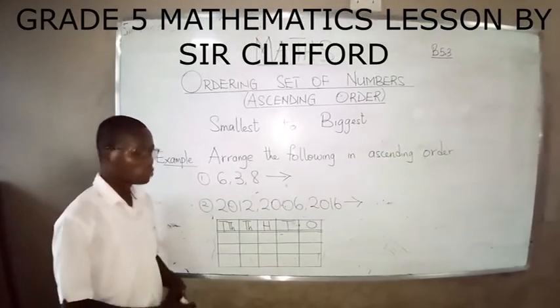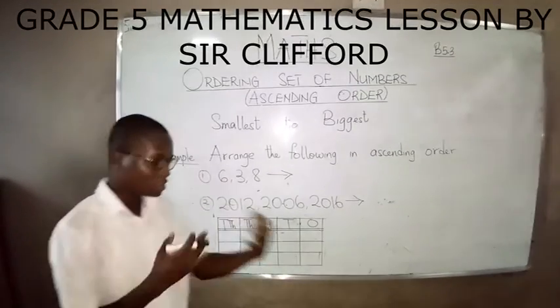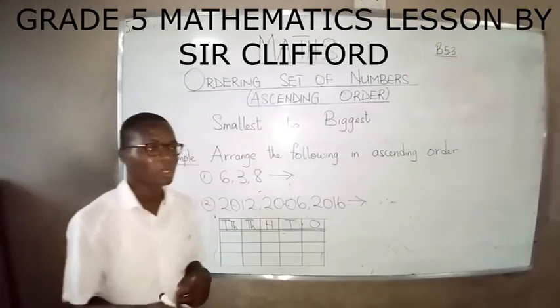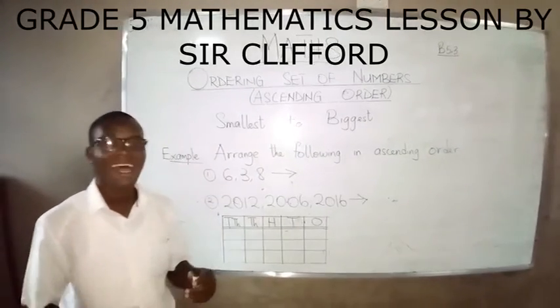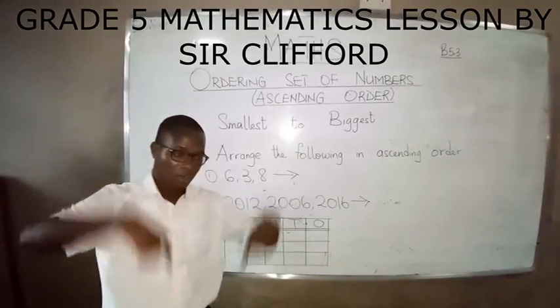When you are told to arrange numbers, there are two main ways to arrange numbers — that is, ascending order and then descending order.